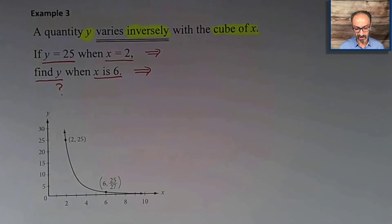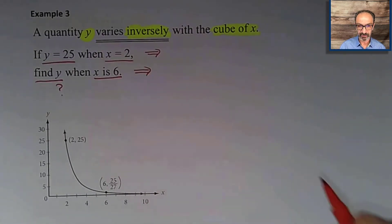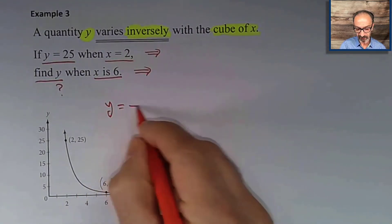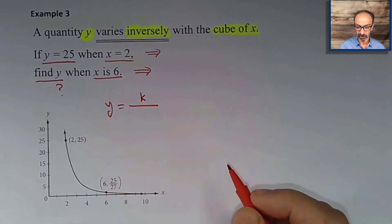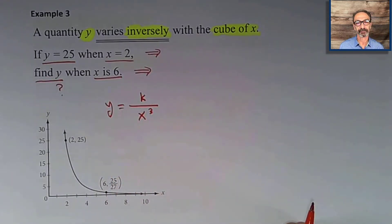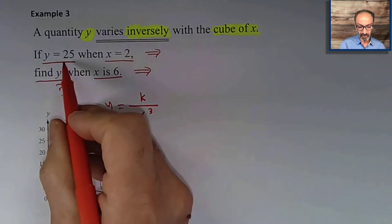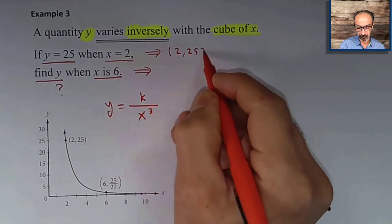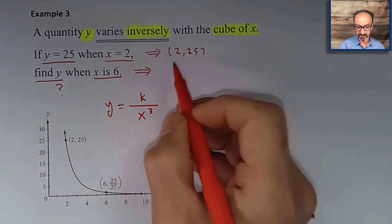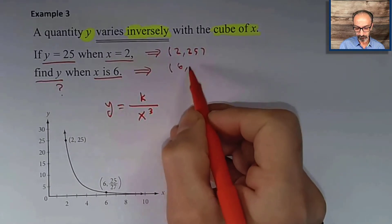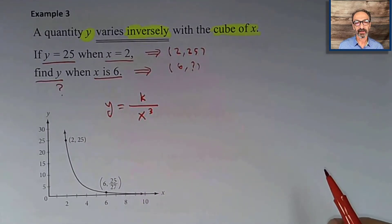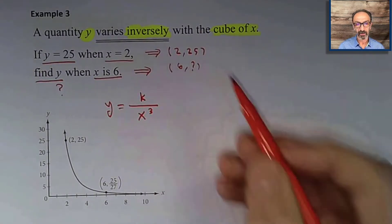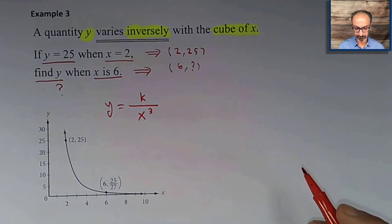Example three: a quantity y varies inversely with the cube of x, meaning y equals k over x to the power 3. If y equals 25 when x equals 2, find y when x equals 6. We find k first, just like the previous example, then use that formula with k known to find y.